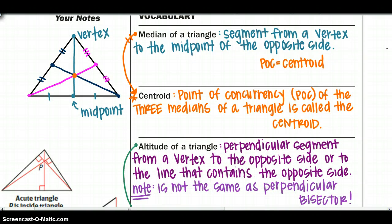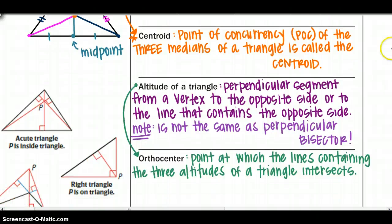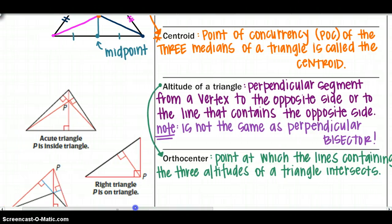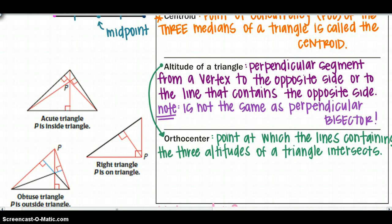Moving on to altitudes: the altitude is the perpendicular segment from a vertex to the opposite side, or the line that contains that opposite side. Note that this is not the same as the perpendicular bisector, so we have to make sure we can differentiate the two. The point of concurrency of these altitudes is called the orthocenter — the point at which the lines containing the three altitudes of a triangle intersect.